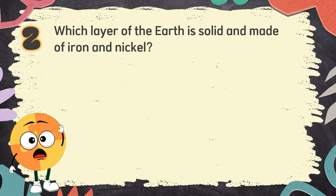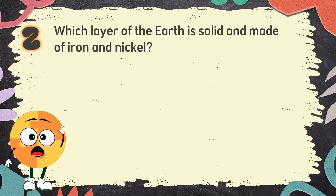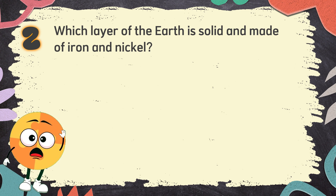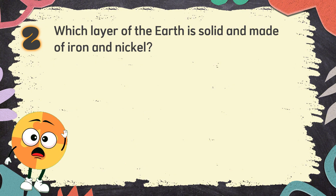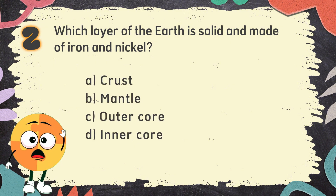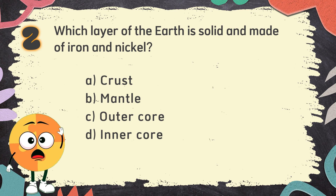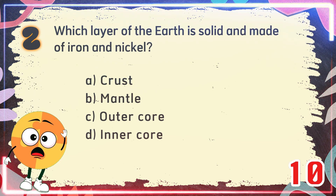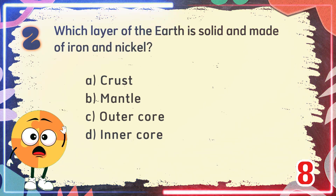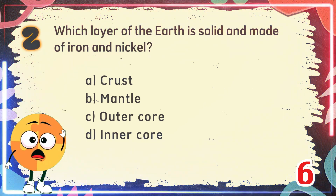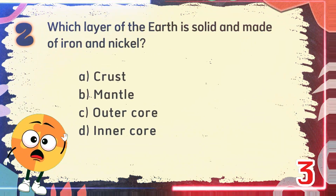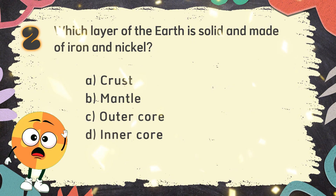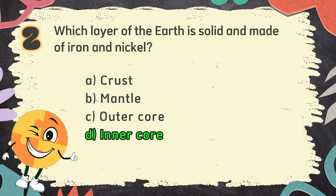Number 2. Which layer of the Earth is solid and made of iron and nickel? The choices are: A. Crust, B. Mantle, C. Outer Core, D. Inner Core. The correct answer is D. Inner Core.